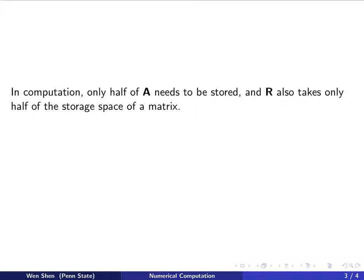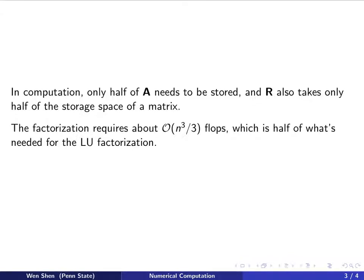In this case there are some computational advantages. First only half of A needs to be stored since A is symmetric. And then R also takes only half of the storage space of a matrix. The factorization requires about an order of N cubed over 3 flops which is half of the amount needed for the LU factorization.